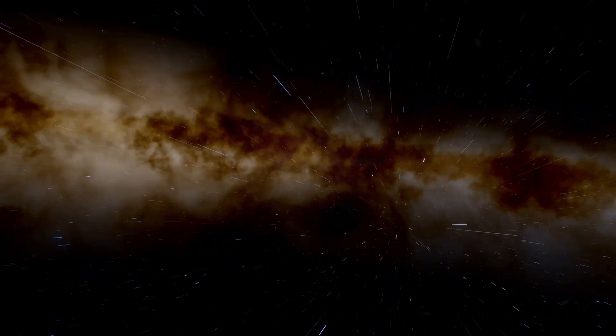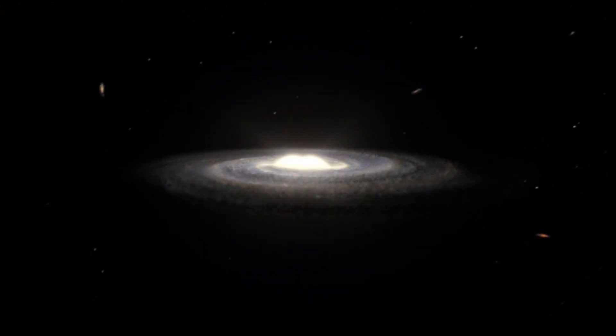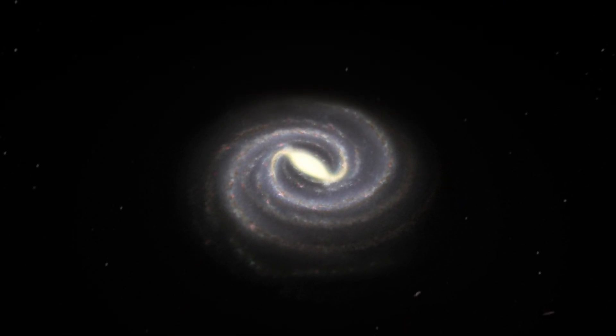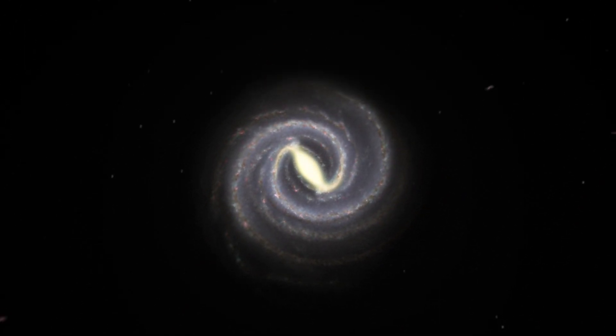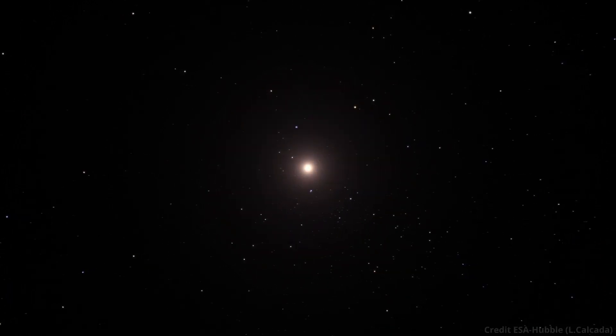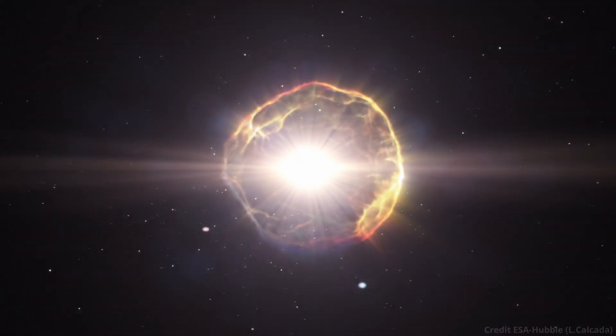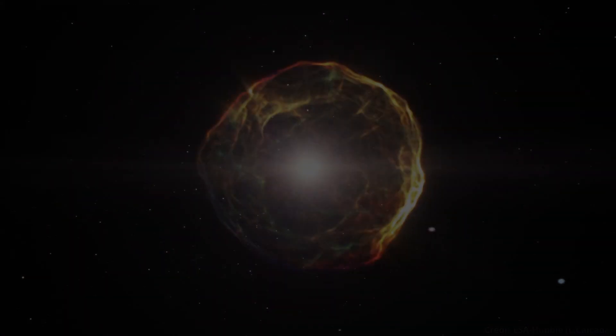Some of the most dangerous regions are actually the spiral arms, where there are very high concentrations of star births and deaths. Supernovas are much more frequent in these areas, and traversing them is a bit like crossing a galactic minefield, never knowing when one's going to go off in your face.